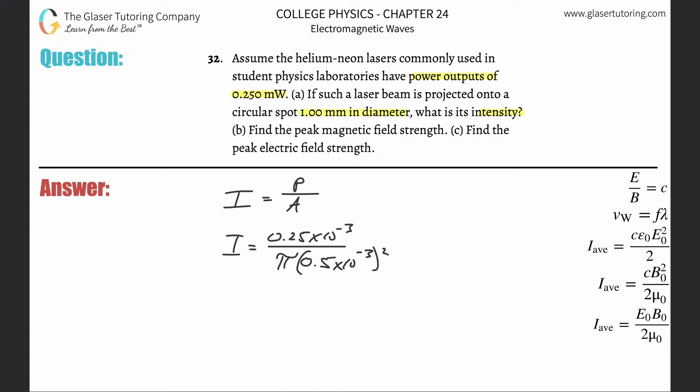But don't forget to then square the radius. And here we go. So this is going to be 0.25 times 10 to the minus 3, divided by pi times 0.5 times 10 to the minus 3 squared. Close the parentheses. And we get about 318 watts per square meter. That's the intensity. So that takes care of letter A.